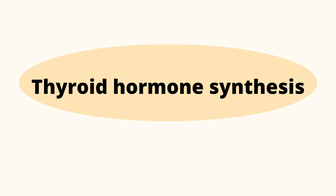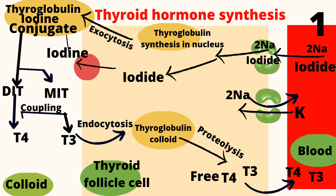Thyroid hormone synthesis begins with active transport of iodide from the blood into the thyroid follicle cell via the sodium-iodide symporter present in the basolateral membrane. This iodide then moves from the basolateral surface to the luminal surface of the thyroid follicle, where it is oxidized by peroxidase enzymes present in the luminal membrane.